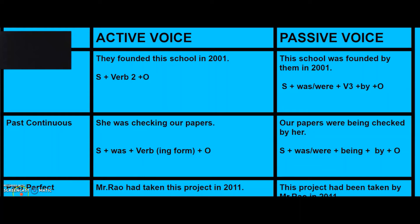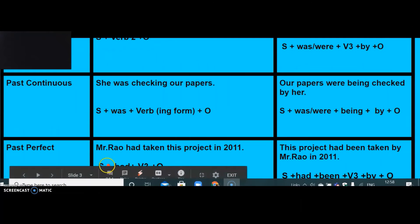For past perfect tense: 'Mr. Rao had taken this project in 2011.' The sentence structure is subject plus had plus verb-3 plus object. Its conversion is: 'This project had been taken by Mr. Rao in 2011.'